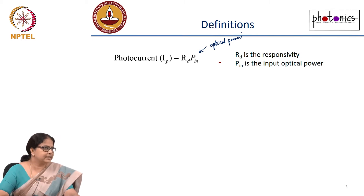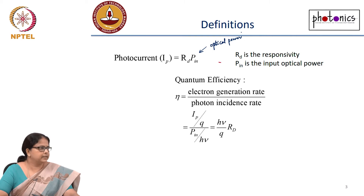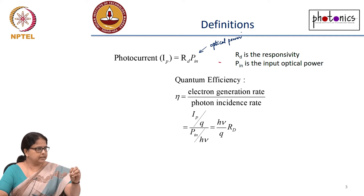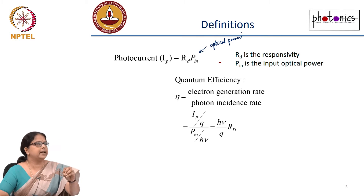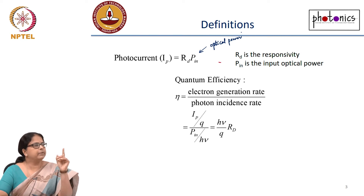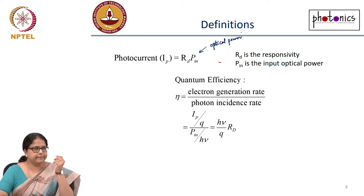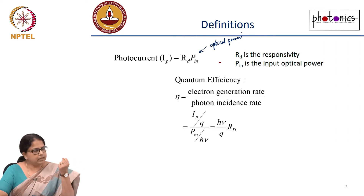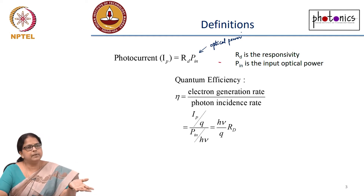There is also the term quantum efficiency. Quantum efficiency tells you the rate at which electrons are generated relative to the rate at which photons are incident. Every incident photon need not necessarily create an electron-hole pair. If one photon creates one electron-hole pair, the quantum efficiency is 1, but it need not be 1. Here we are using a particle picture — talking about photons, which means energy.